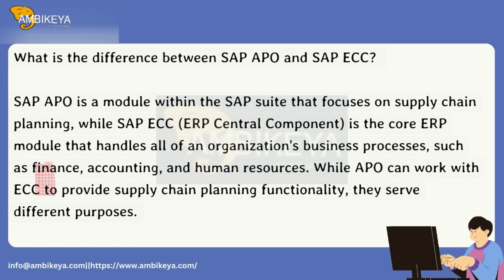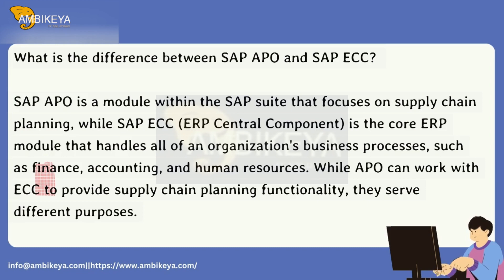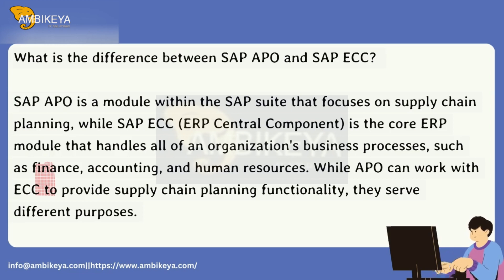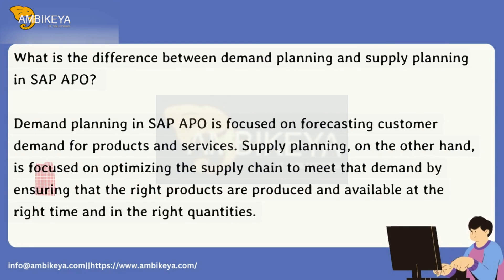What is the difference between SAP APO and SAP ECC? SAP APO is a module within the SAP suite that focuses on Supply Chain Planning, while SAP ECC (ERP Central Component) is the core ERP module that handles all of an organization's business processes, such as finance, accounting, and human resources. While APO can work with ECC to provide supply chain planning functionality, they serve different purposes.